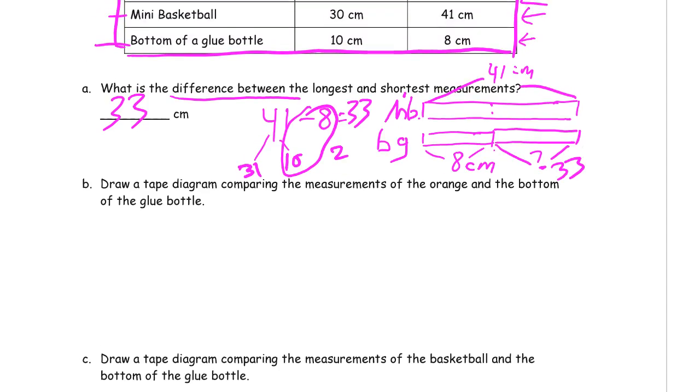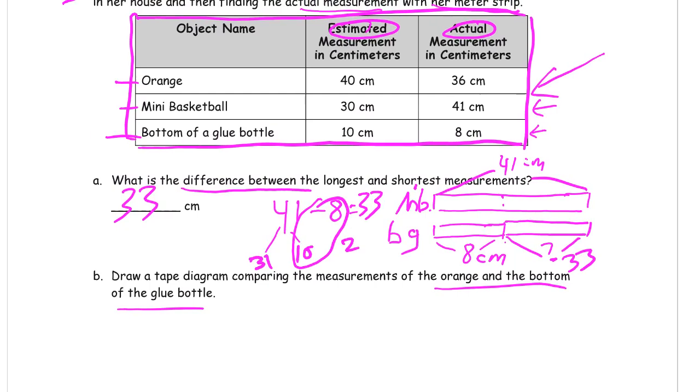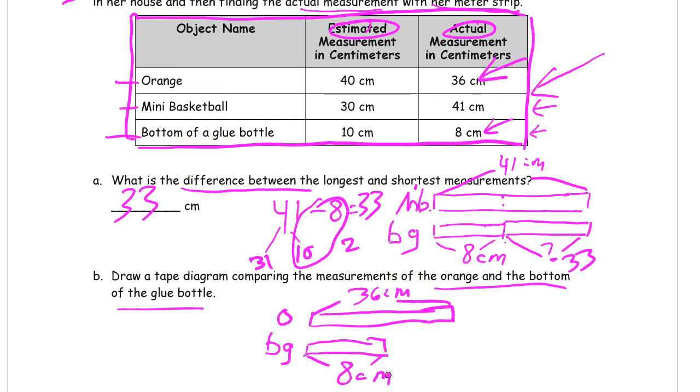Part B. Draw a tape diagram comparing the measurements of the orange and the bottom of the glue bottle. The measurement of the orange was 36 and the bottom of the glue bottle was 8. Now with the directions for this, it says draw a tape diagram. So all we have to do is draw the tape diagram. We don't have to solve it. We just have to draw it and label it. So this is the orange, O. And this is the bottom of the glue, BG. The glue is 8 and the orange was 36. Both centimeters. Done.